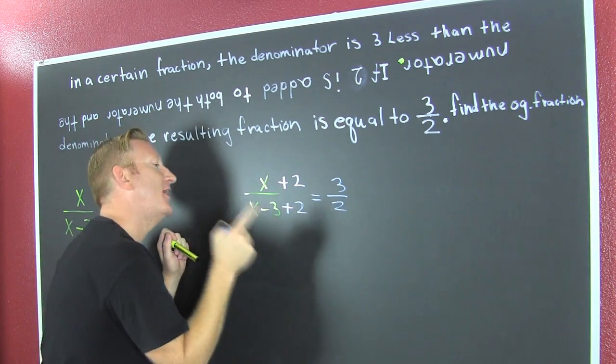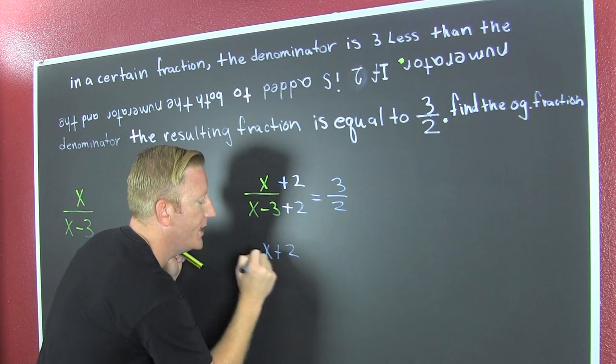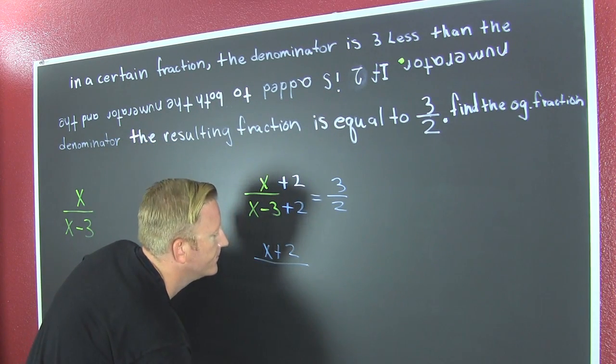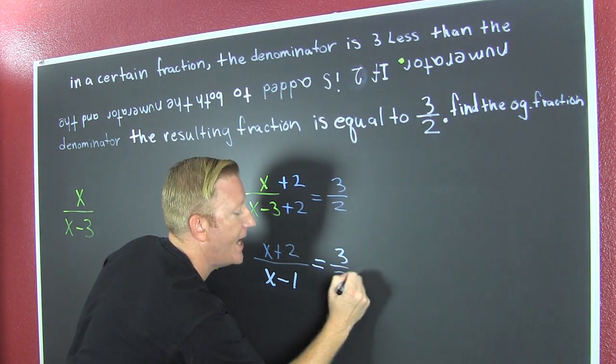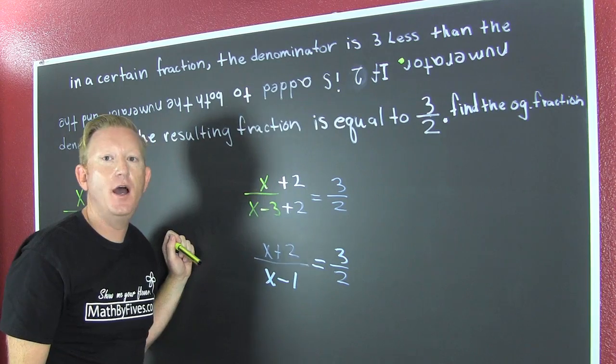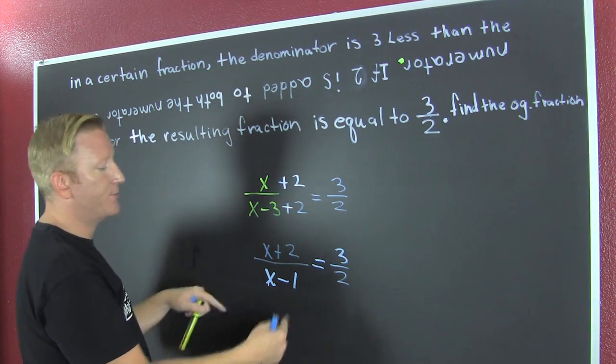Okay, let me simplify this rational equation. That's x plus two divided by x minus one. That's equal to three halves. Now, I have a bunch of different ways I can solve this. So, I'm just gonna cross multiply.